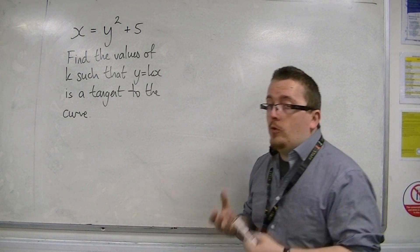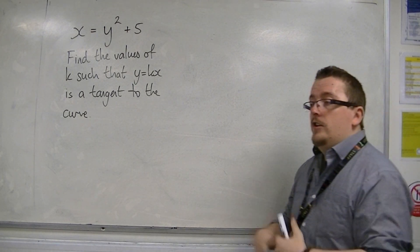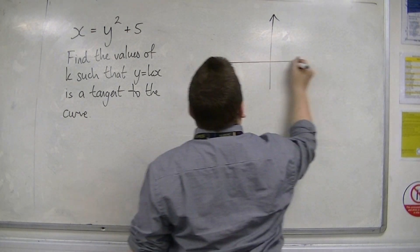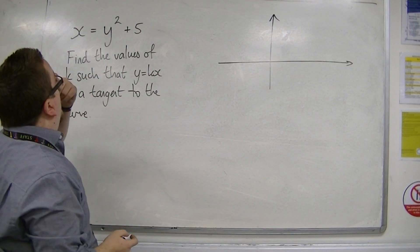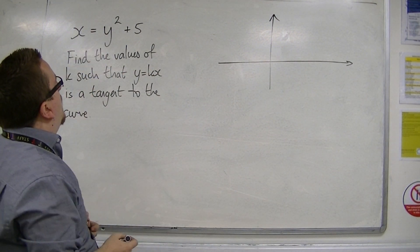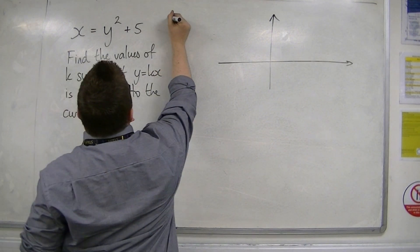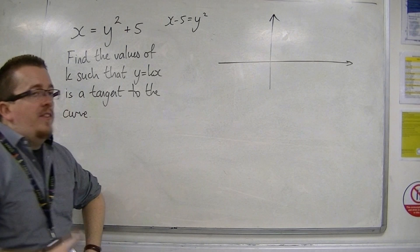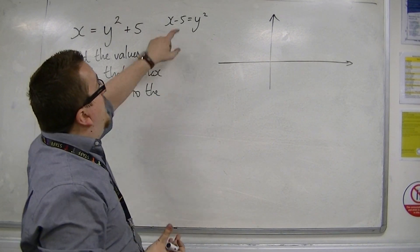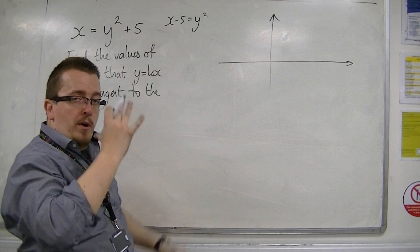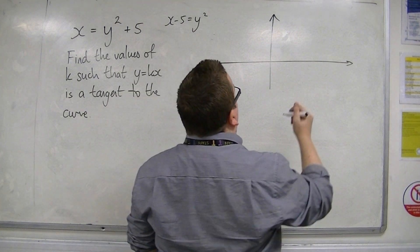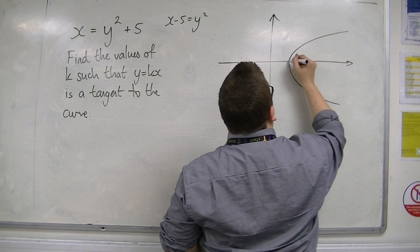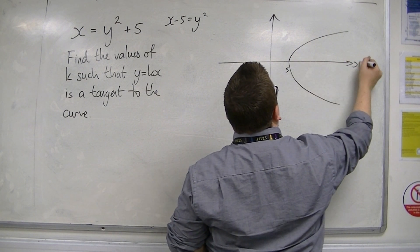So I'm going to sketch it first, just to show you what's going on. So x is equal to y squared plus 5. Now, if you rearrange that, that's x minus 5 is equal to y squared. So this is x equals y squared, which has been translated by the vector 5, 0. So it's a parabola that looks like this, going through 5 on the x-axis.